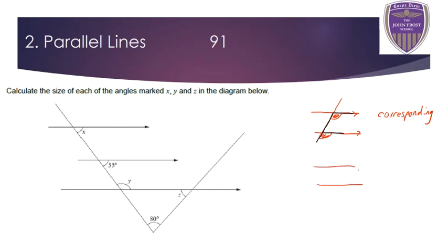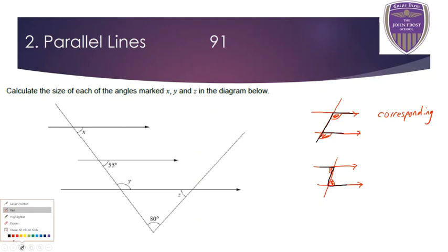The second rule: drawing my two parallel lines with a line that creates some angles, this angle here and this angle here are also equal in size. If I draw lines that join up the ones creating the angles, you can see it makes a Z shape. We refer to these as Z angles, but in proper notation they are called alternate angles, and again they are equal in size.